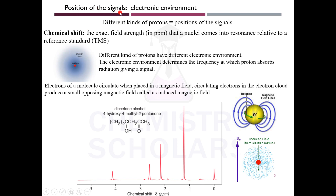The positions of the NMR signals tell you about the electronic environment. Different types of protons attached to different electronic environments give you different positions of the signals. Every proton or nuclei is surrounded by a set of electrons — an electron cloud — and this electronic environment decides the frequency at which the proton is going to absorb radiation and give a signal.